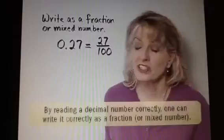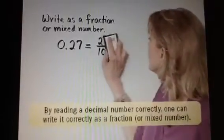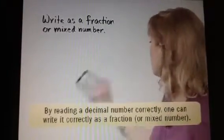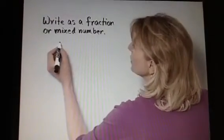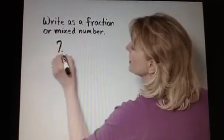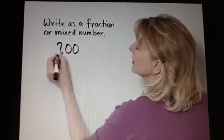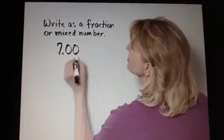Let's try that again. We just need to read the decimals correctly, and we can write them as fractions or mixed numbers. Here we have, let me write it down, and then we'll read it correctly. 7 decimal point 008.